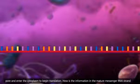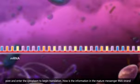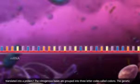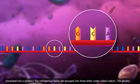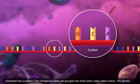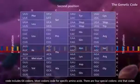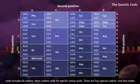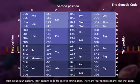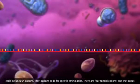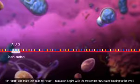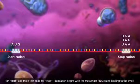How is the information in the mature messenger RNA strand translated into a protein? The nitrogenous bases are grouped into three-letter codes called codons. The genetic code includes 64 codons. Most codons code for specific amino acids. There are four special codons, one that codes for start and three that code for stop.